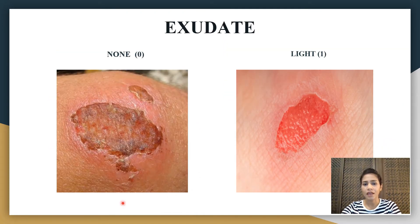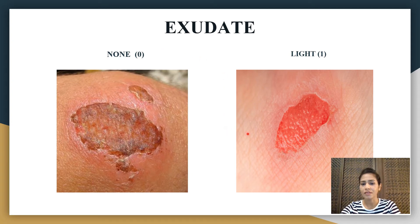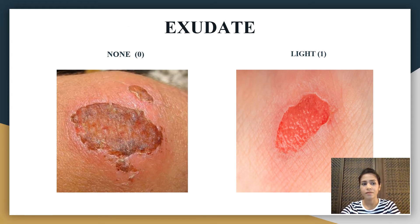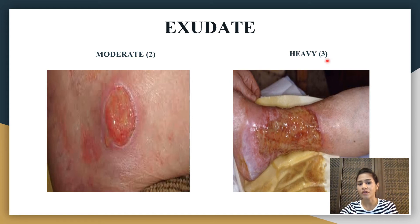The second parameter is exudate, which means discharge or drain from the wound. If there is no drain or discharge and it looks almost dry, you give a score of 0. In the second picture, there is mild drain noted, so your score should be 1. If the drain amount is moderate, you give a score of 2. And if the drain is heavy, you give a score of 3.